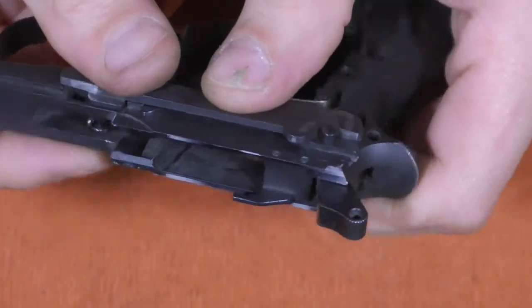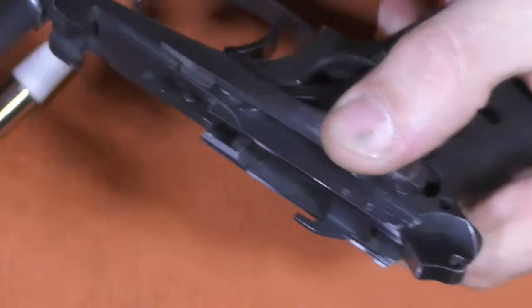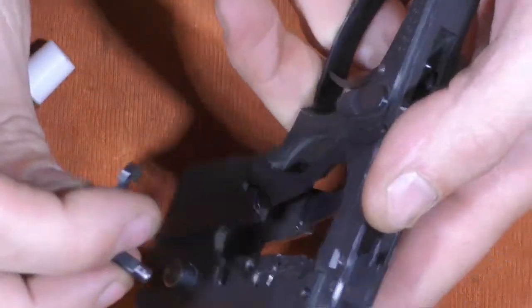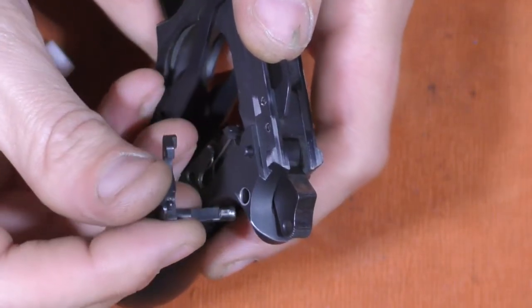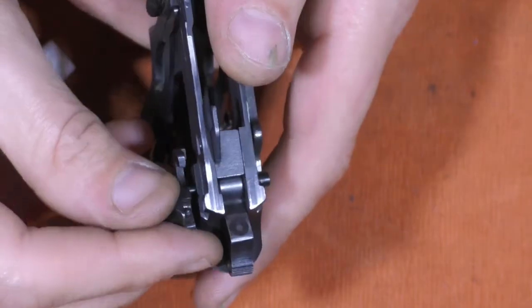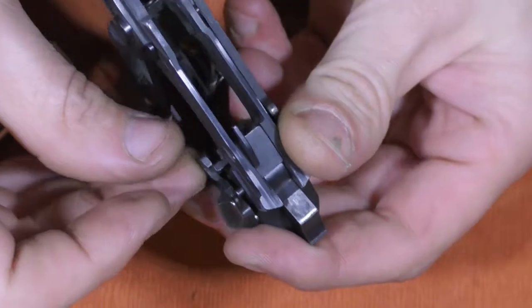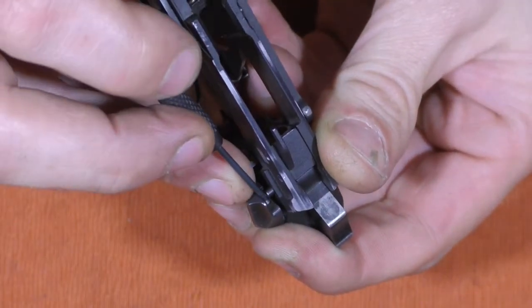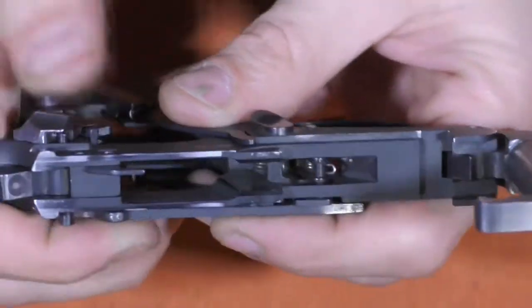And now we just have to put the safety back in. And in order to do that, we have to cock the hammer. And the safety goes in from this side. And again, remember that little tiny detent there. You can see it by my thumb. Don't forget about that guy. Slide that down. And use a punch to push the detent in. There we go. And that's back in place.